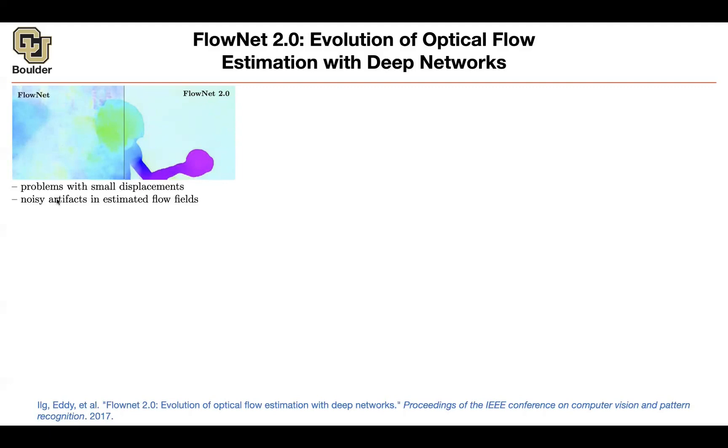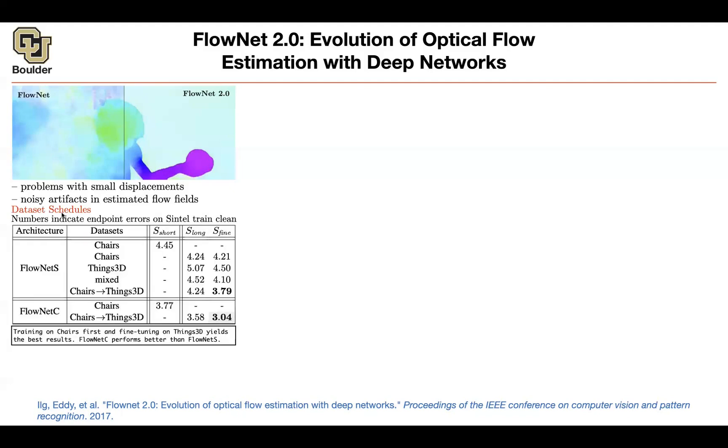FlowNet is going to have some problems with small displacements when the pixel is not moving too much, and then it's going to have some noisy artifacts in the estimated flow. Let's try to fix them. But first, before we do that, let's take a closer look at FlowNet and see what we are doing.